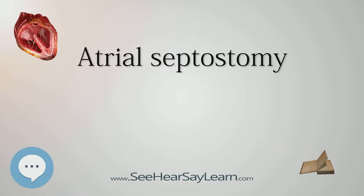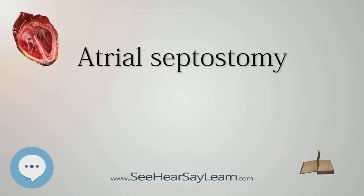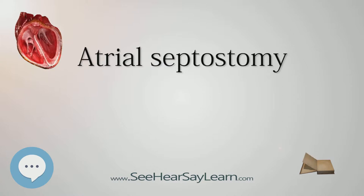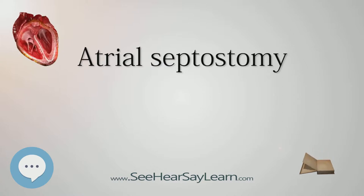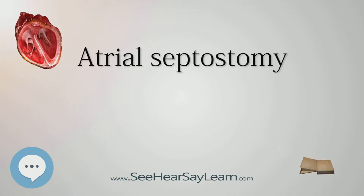In a normal heart, oxygen-depleted blood is pumped from the right side of the heart through the pulmonary artery to the lungs, where it is oxygenated — this is the pulmonary circulation. The oxygen-rich blood then returns to the left heart via the pulmonary veins and is pumped through the aorta to the rest of the body, including the heart muscle itself — this is the systemic circulation.